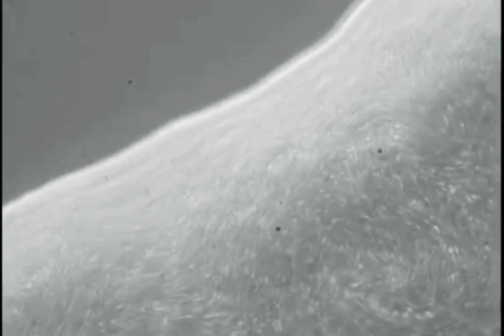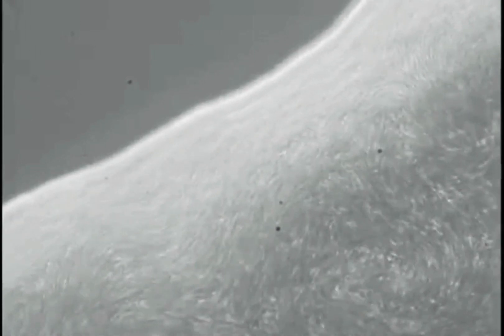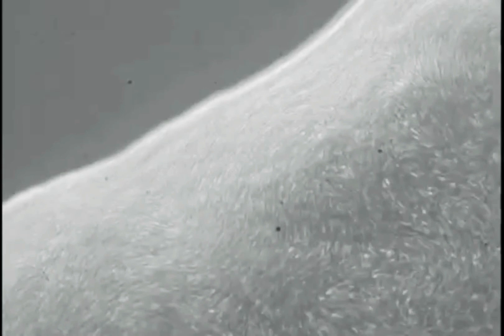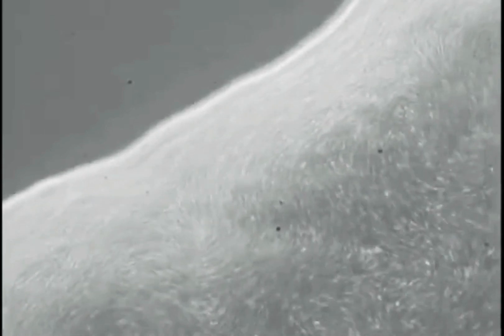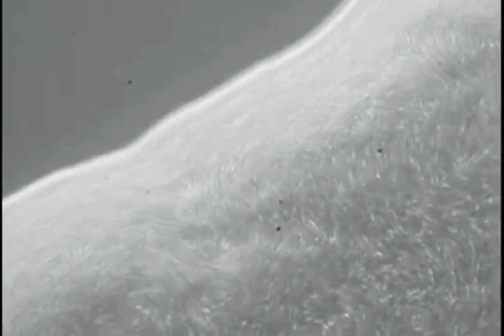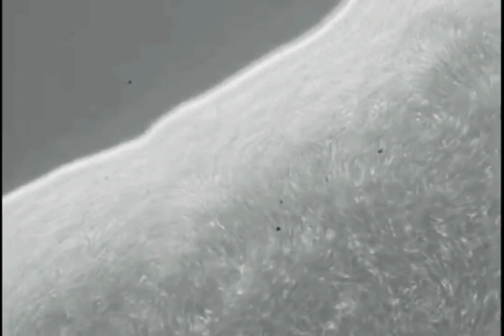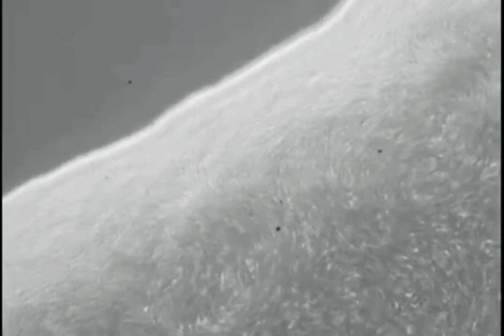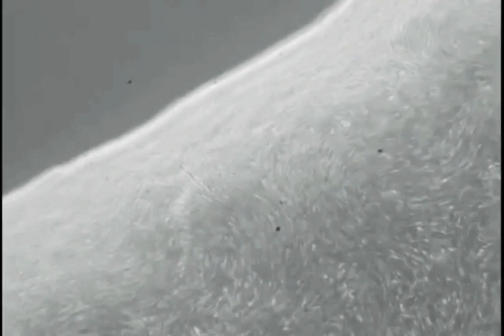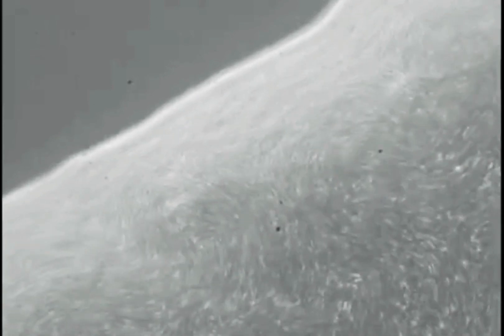P. mirabilis causes 90% of all Proteus infections in humans. It is widely distributed in soil and water. Proteus mirabilis can migrate across the surface of solid media or devices using a type of cooperative group motility called swarming.